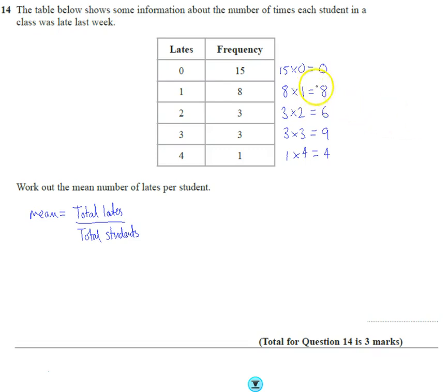So the total number is eight and six is fourteen, plus nine is twenty-three, twenty-seven. Wow.